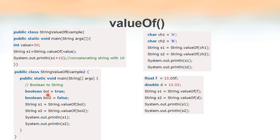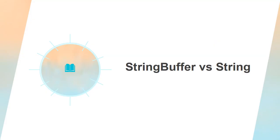Similarly, this example shows how we can convert boolean values into string by means of the valueOf method. Here we are converting character variables into a string using valueOf. And here we are converting floating point and double variables into string using valueOf.